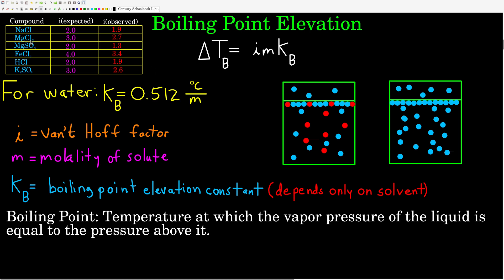As a reminder about Van't Hoff factors: you do not have to memorize them or the boiling point elevation constant. For water, Kb is 0.512 degrees Celsius per molal. Remember, delta Tb is the change — final minus initial — so the boiling point with the solute minus the boiling point of the pure solvent without the solute.